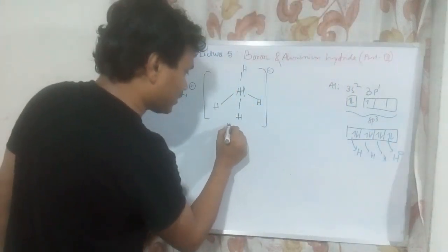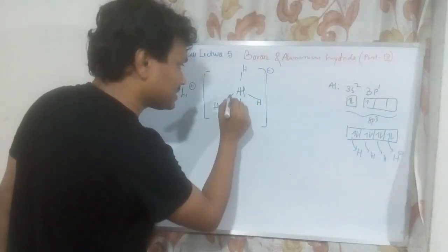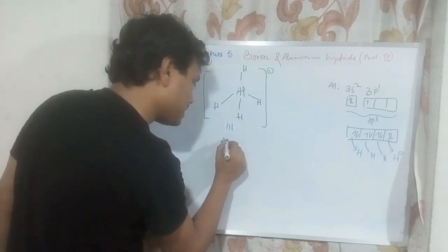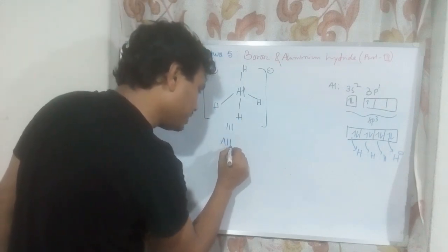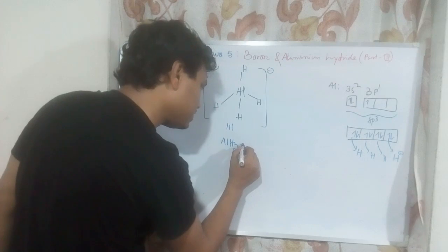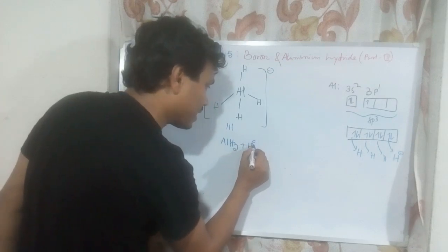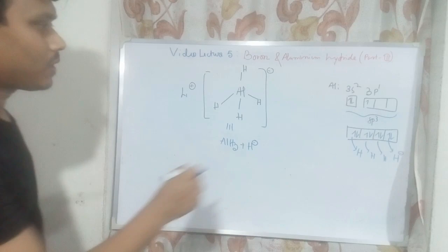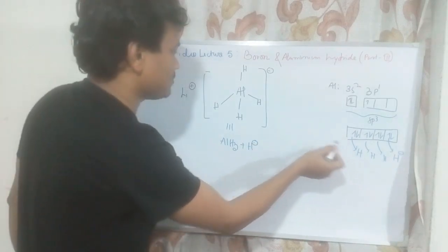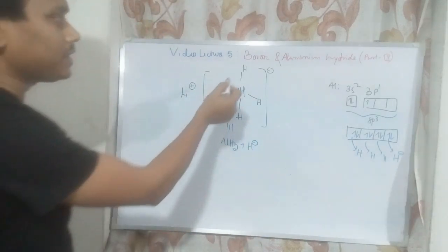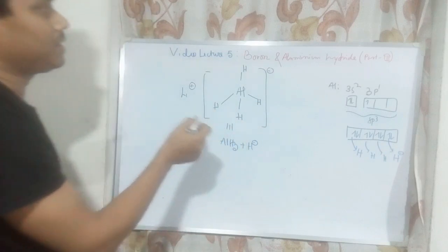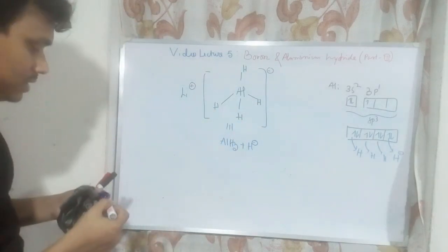The vacant orbital is filled by a pair coming from hydride. So we can consider AlH4⁻ as a combination of AlH3 plus H⁻. This will help us understand the hybridization and property of AlH4⁻ in a better way.